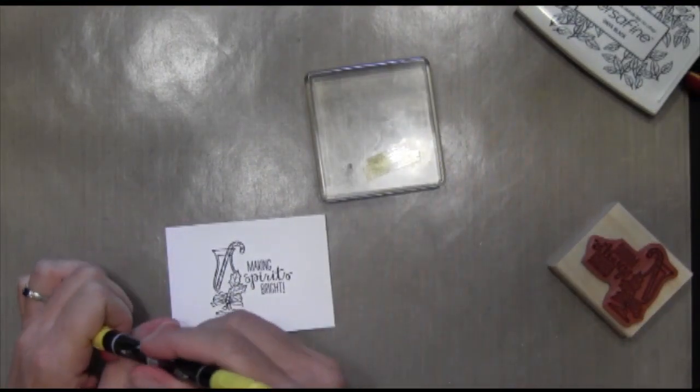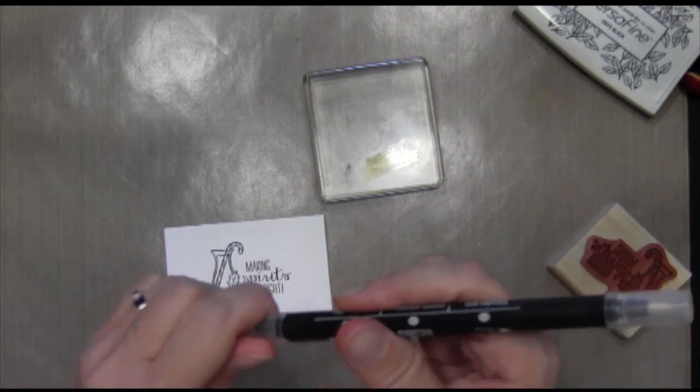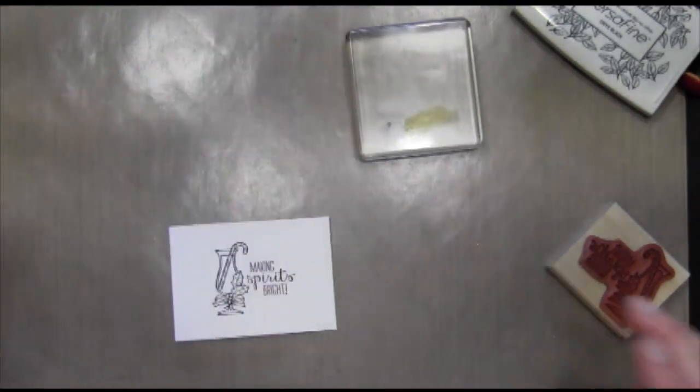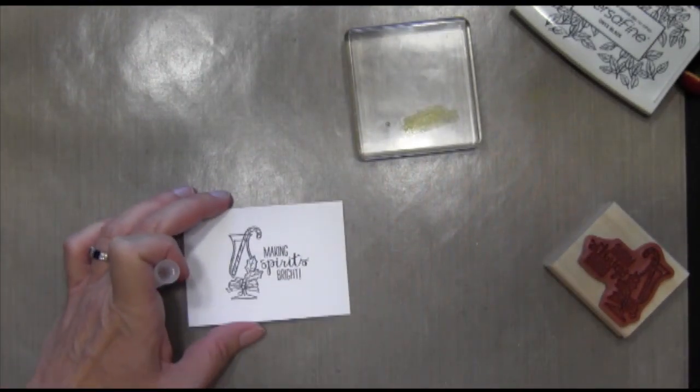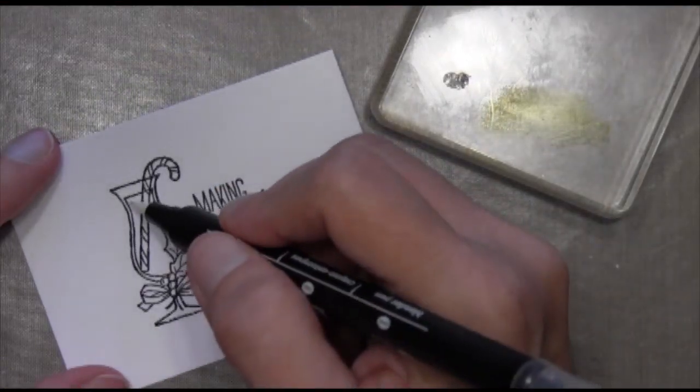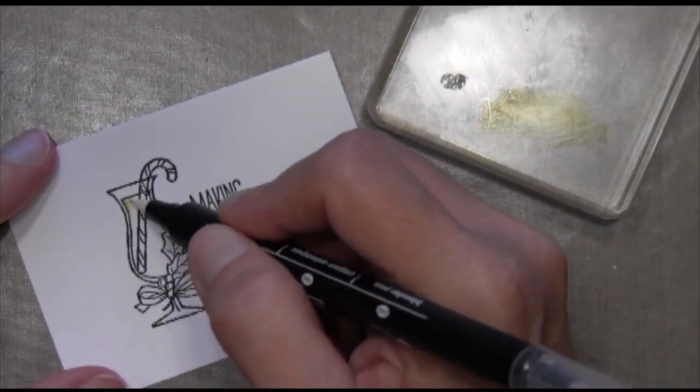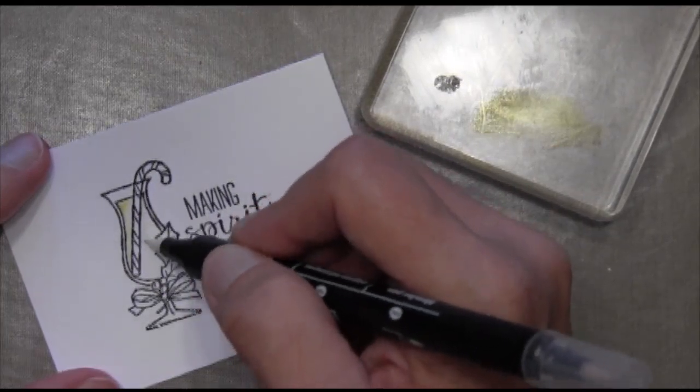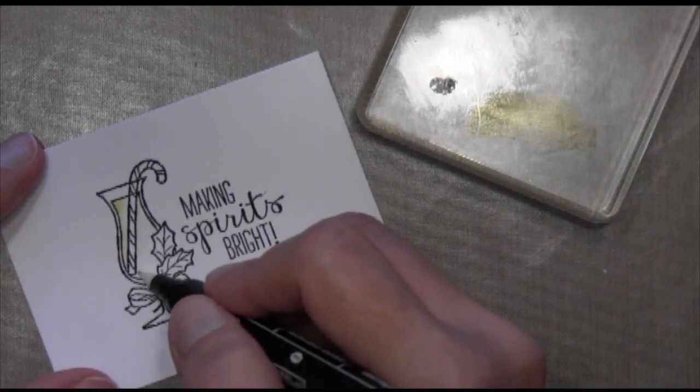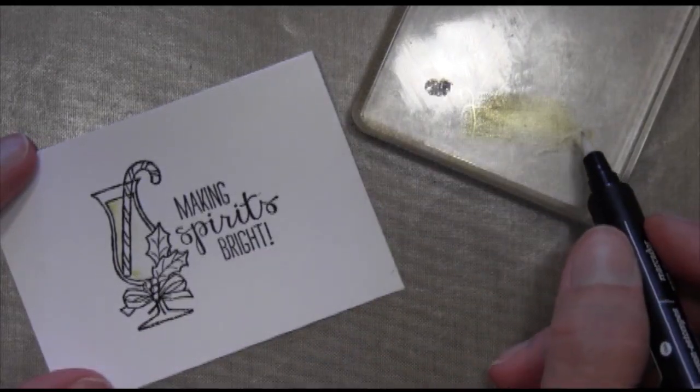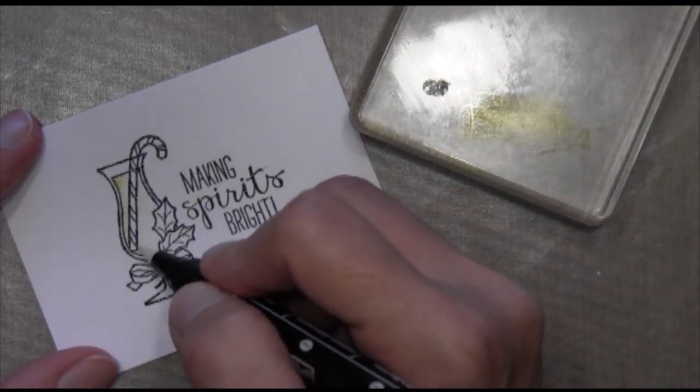Now, I do this a lot with my Stampin' Up markers. I'm putting a little bit of a marker, this is So Saffron, on an acrylic block. Then I'm going to pick it up with a blender pen. I find that when I use the Stampin' Up markers directly to the paper, they come out a little bit too dark. I wanted this to have a little bit of dimension, so I start off on the left side and work my way to the right. A blender pen has a chemical in it that'll pull the color up and then fade it out as you color with it. I'm going to pick it back up, pick up some more color, and work it on my paper.